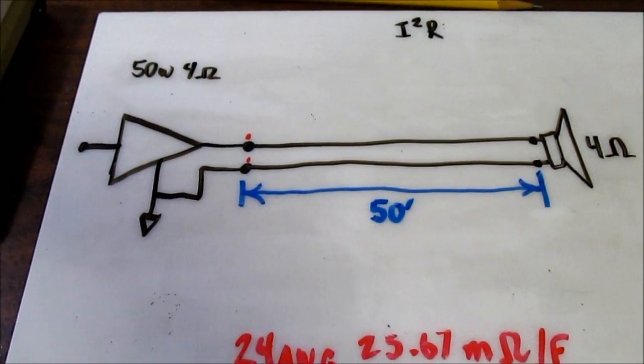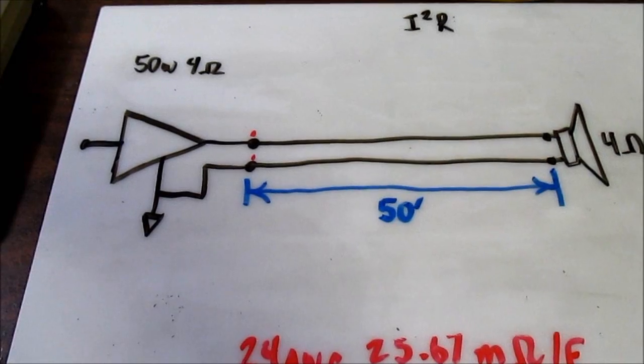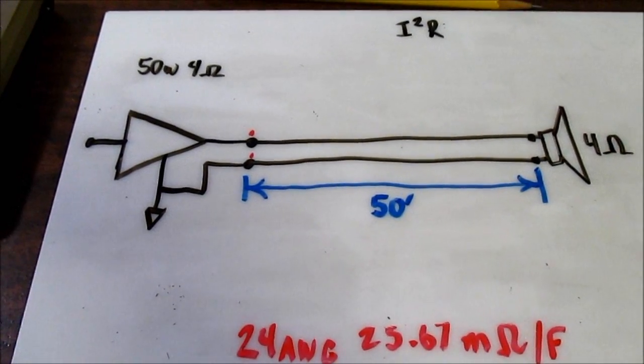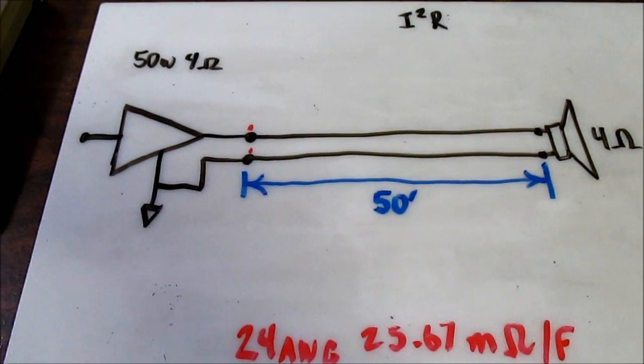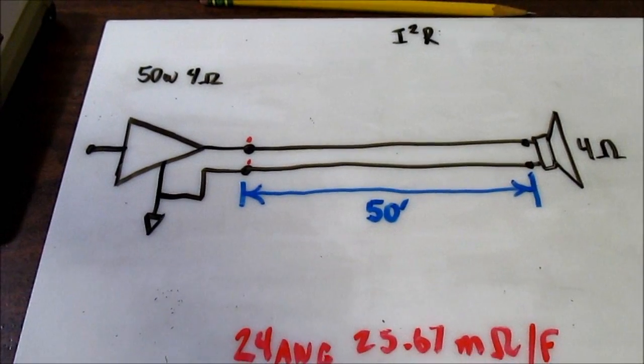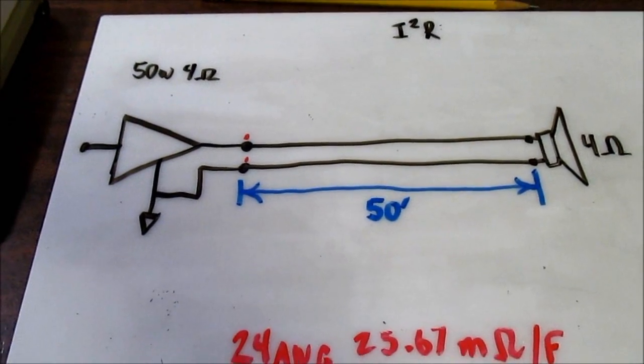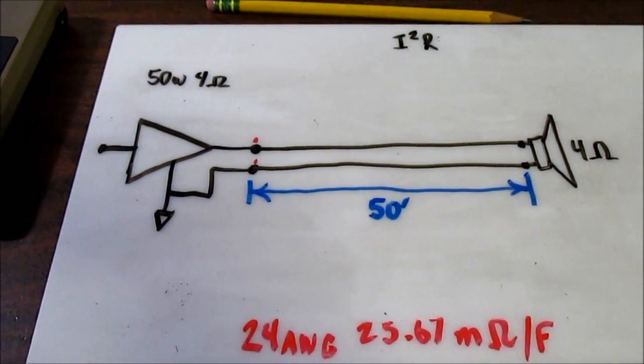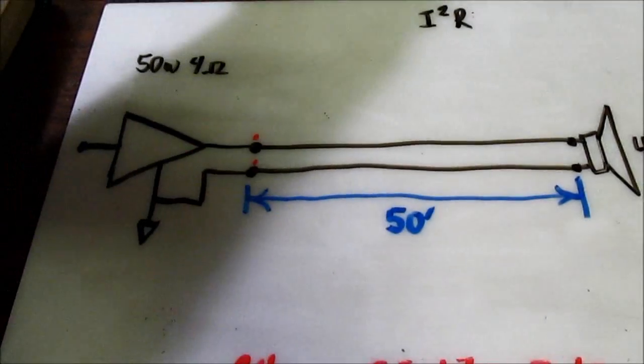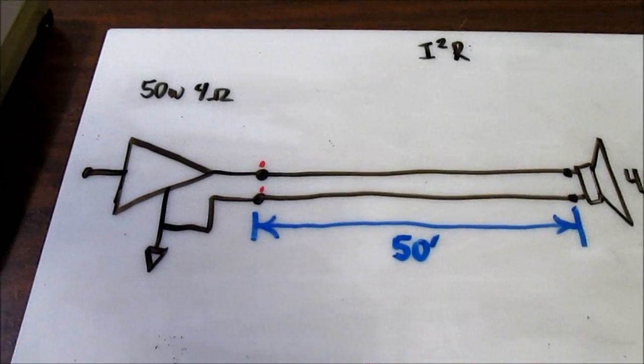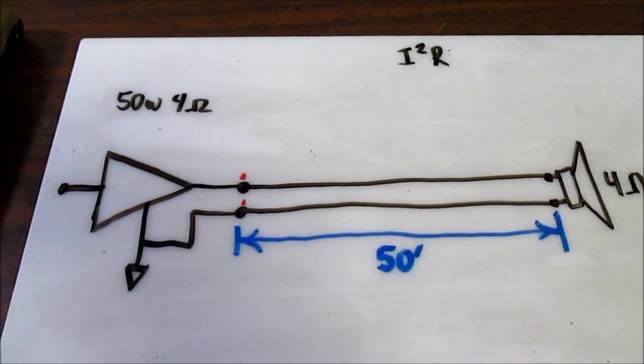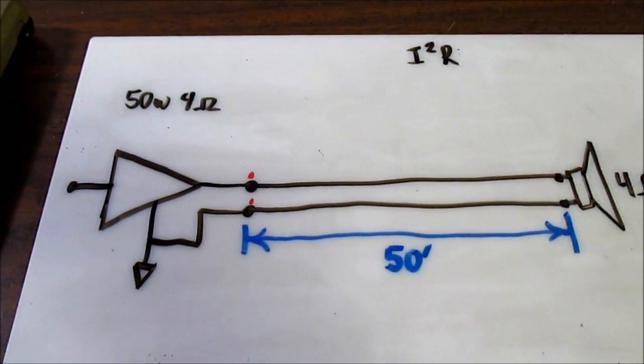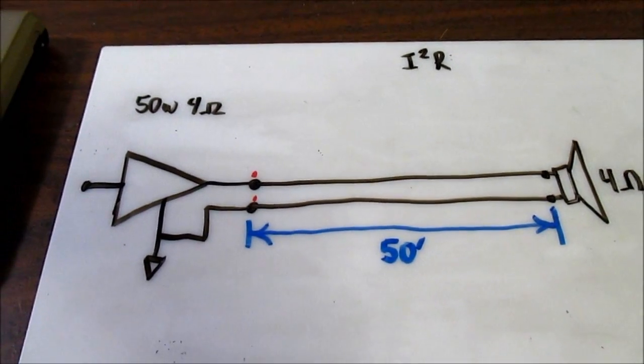Hey guys, I'm going to take a look at I²R losses as it applies with audio. But it can really apply to anything. Whenever you're moving electrical power from one location to another, you're going to have losses. But we'll take a look at an audio system here, and a good reason why you don't ever want to use 24-gauge wire. You want to use something heavier.